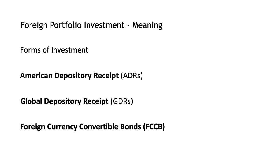There are two ways to invest through foreign institutional investment. One is equity investment, in which 100% investment could be into equity-related instruments, or 70% could be into equity and 30% into debt instruments. In case of the equity route, FIIs can invest in securities in the primary and secondary market.